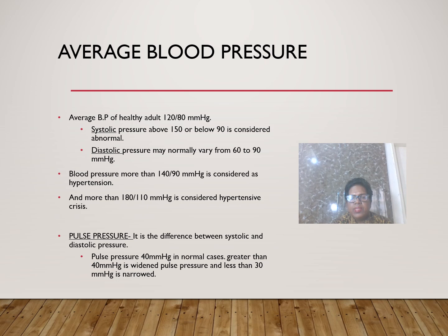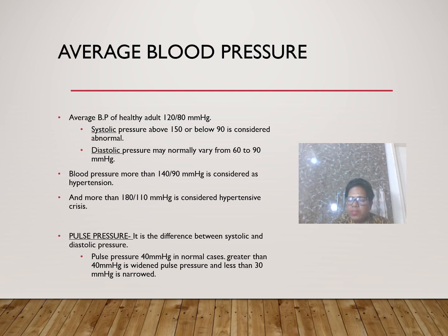Blood pressure more than 140/90 mmHg is considered hypertension. More than 180/110 mmHg is considered a hypertensive crisis. Pulse pressure is the difference between systolic and diastolic pressure — normally 40 mmHg. More than 40 mmHg is widened pulse pressure; less than 30 mmHg is narrowed pulse pressure.